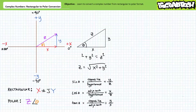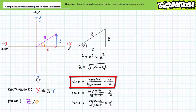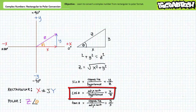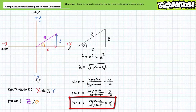Now let's determine the angle. The real horizontal x component and imaginary vertical y component can be visualized as the legs of a right triangle. When viewed from the angle between the magnitude and the real axis, the real x is the adjacent side, the imaginary y is the opposite side, and the magnitude is the hypotenuse. This gives us several options: sine of theta equals imaginary y over magnitude z; cosine of theta equals real x over magnitude z; and tangent of theta equals imaginary y over real x.